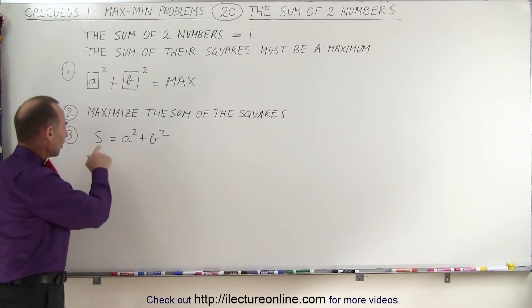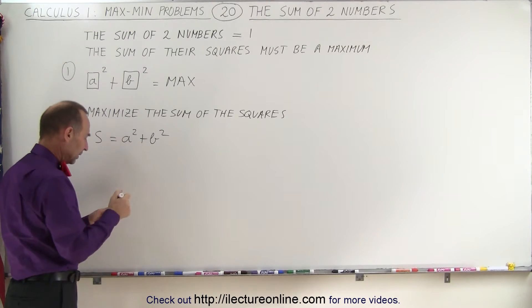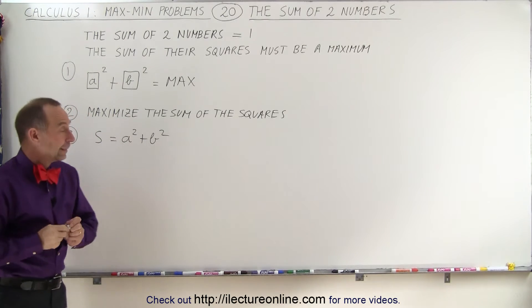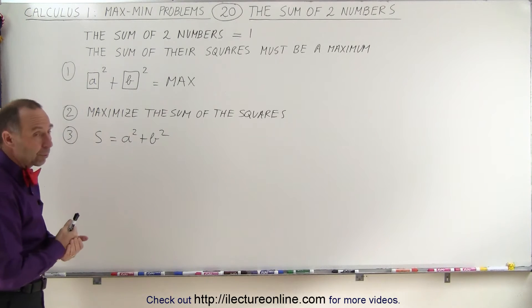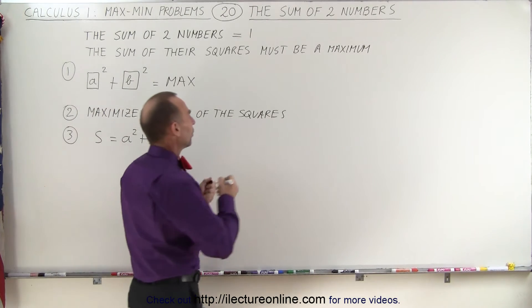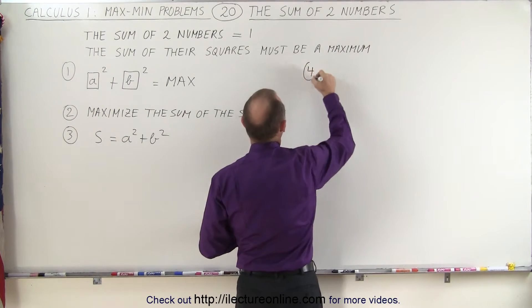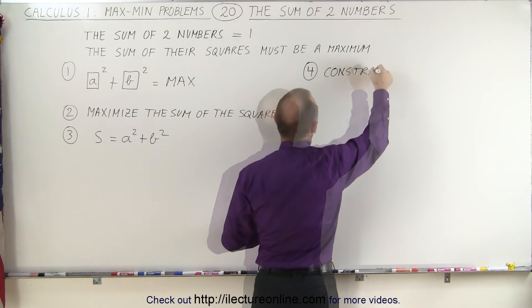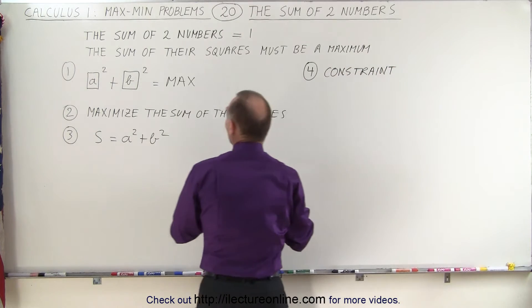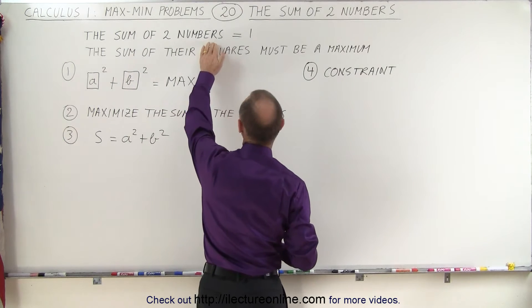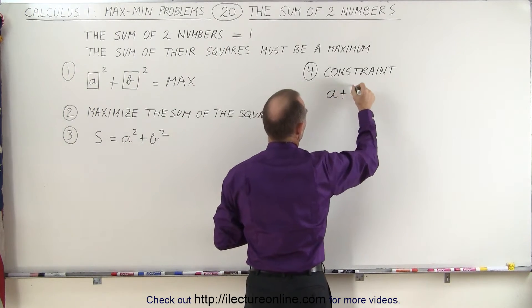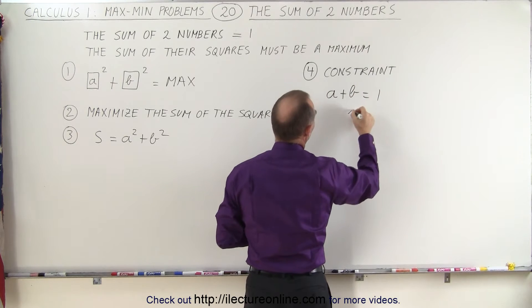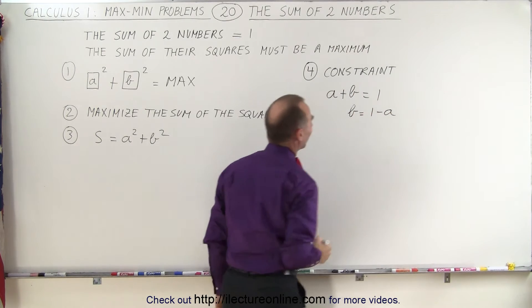Now, since the sum is defined as two different variables, and we don't know what either one of them are, we need to find a constraint that relates the two variables to one another, so we can replace one by the other and only have a function of a single variable. So that's number 4, we need a constraint. And the constraint can be found by realizing that when you add the two numbers together, they're equal to 1.